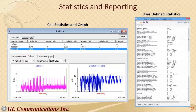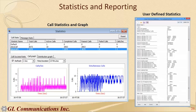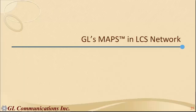MAPS includes built-in statistics and reporting capabilities. Users can configure logging events — similar to placing test points in code — so that when a specific protocol message arrives, an event is written to a log file. These features are fully customizable and allow detailed tracking of protocol behavior during testing.